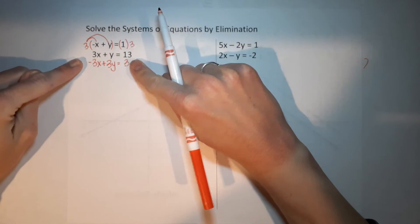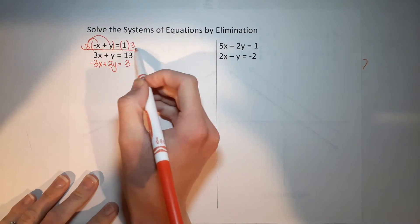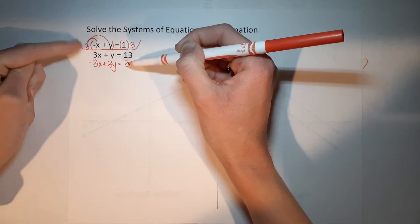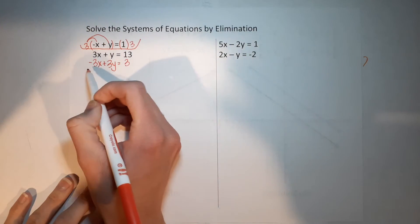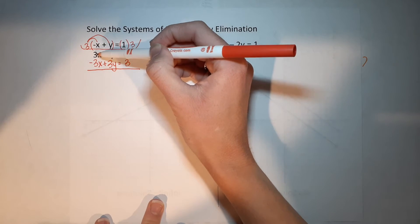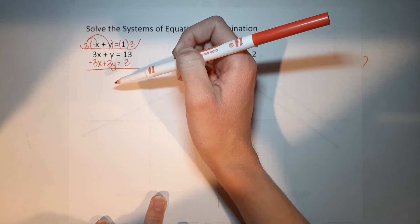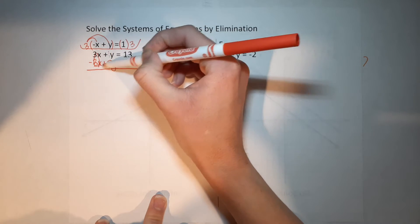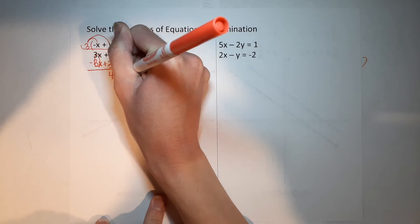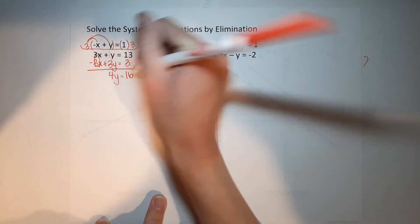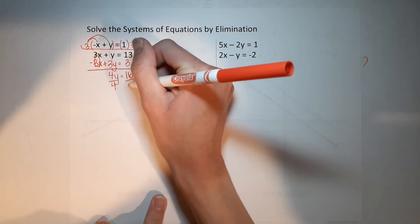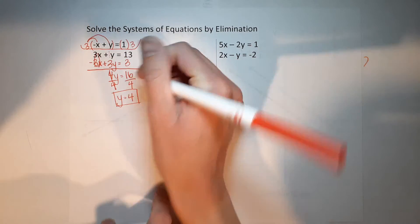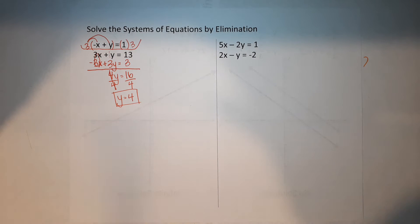This is just the top equation written a different way. Now I'm combining these two equations. Three x minus three x leaves me with zero x's — those go away, which was my whole goal. Then I've got 1y plus 3y, which gives me 4y. And 13 plus 3 gives me 16. Dividing both sides by four, I'm left with y equals 4.